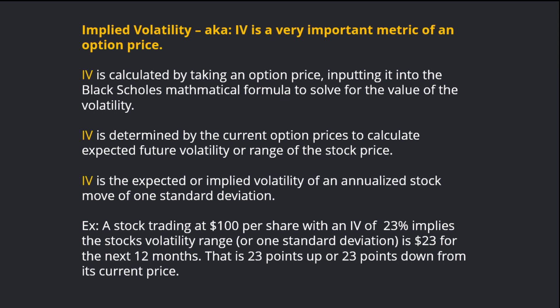An example of this would be a stock trading at $100 per share with an IV of 23%. 23% implies the stock's volatility range, or one standard deviation, is $23 for the next 12 months — that is 23 points up or 23 points down from its current price.